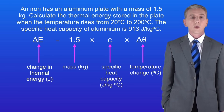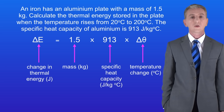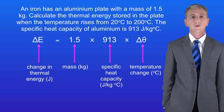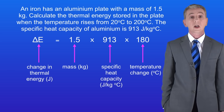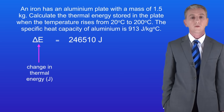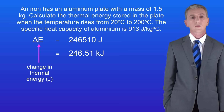We've got a mass of 1.5 kilograms. The specific heat capacity of aluminium is 913 joules per kilogram per degree Celsius, and the change in temperature is 180 degrees Celsius. Putting these into the calculation gives us a total change in thermal energy of 246,510 joules. We can also convert that to kilojoules, giving us a value of 246.51 kilojoules.